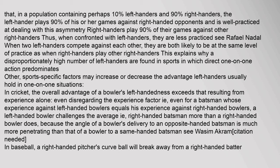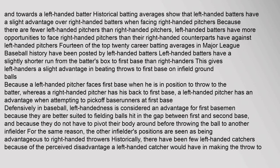In baseball, a right-handed pitcher's curveball will break away from a right-handed batter and towards a left-handed batter. Historical batting averages show that left-handed batters have a slight advantage over right-handed batters when facing right-handed pitchers. Because there are fewer left-handed pitchers than right-handed pitchers, left-handed batters have more opportunities to face right-handed pitchers. 14 of the top 20 career batting averages in Major League Baseball history have been posted by left-handed batters. Left-handed batters also have a slightly shorter run from the batter's box to first base.